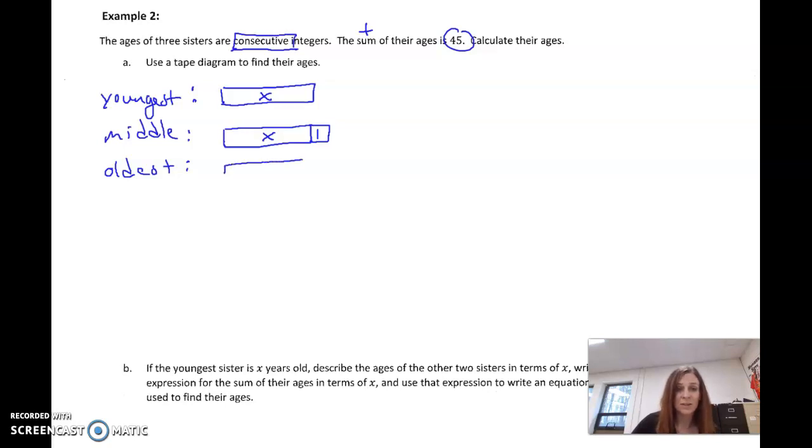So the oldest also is X. And not only is she one year older, but she's another year older. So you can see what we've added on every year. So we know that all together, their ages are 45.